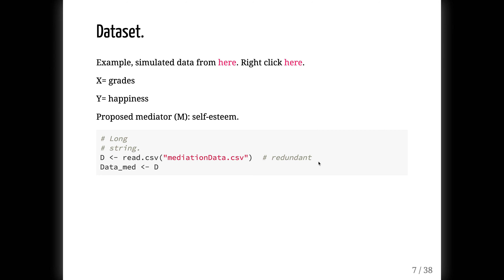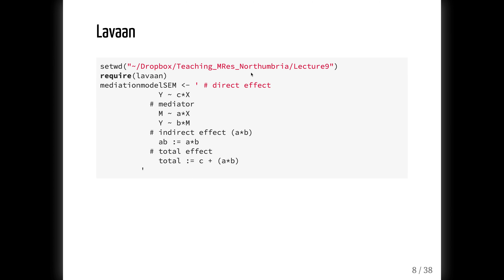This is the data you can get from the previous lecture — it's also available here, so if you right-click you'll be taken to the data set. We're reading the data set as shown below. We have grades and happiness, and as a proposed mediator, self-esteem. Now, how would we go about building such a model in structural equation models?